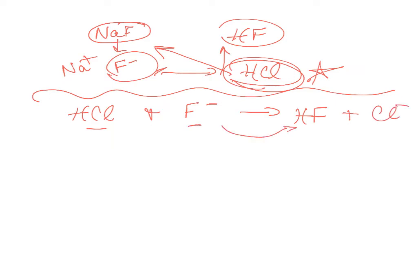When a contaminant reacts with half of the buffer, you make the other half — that's part of the magic of a buffer. You go back and forth between the conjugate pairs if contamination occurs. Now do a mole table. Since they are solutions, to find moles you multiply molarity by volume. Keep volume in milliliters to get millimoles.